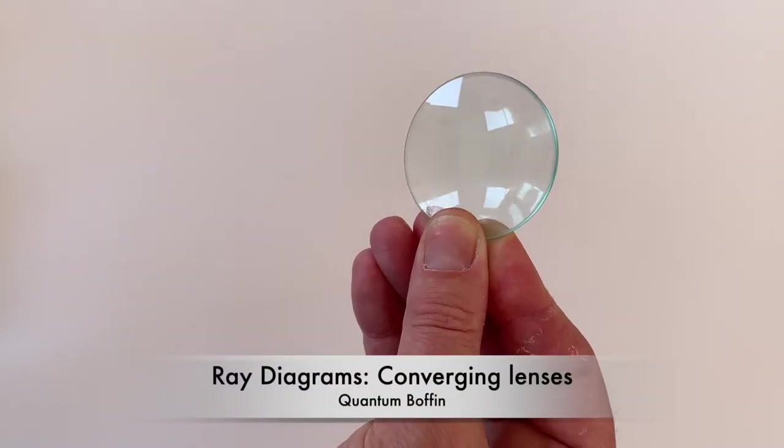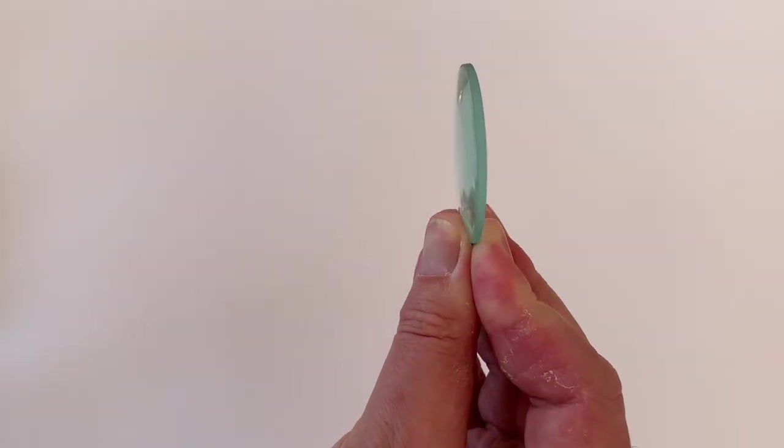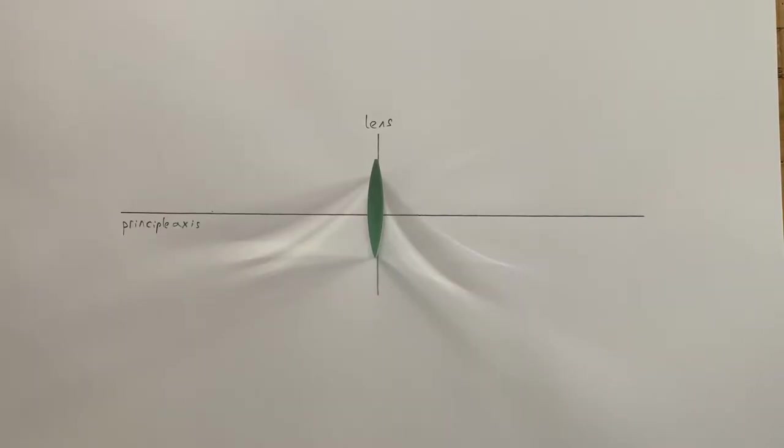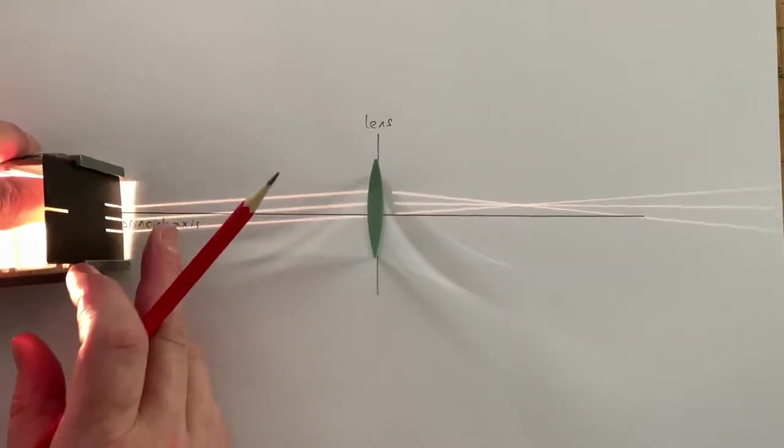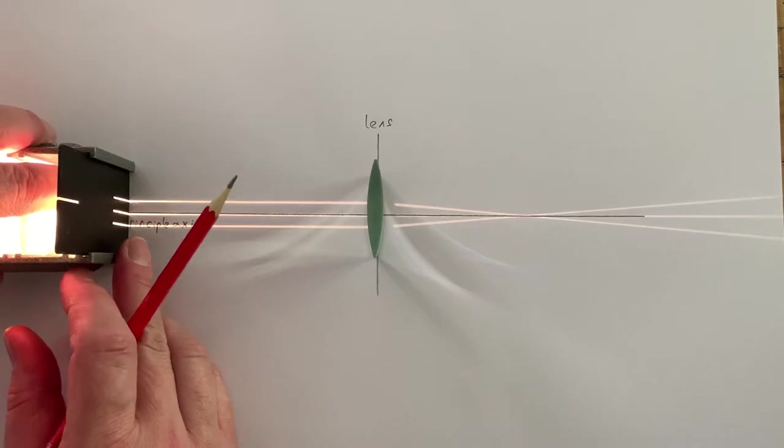A convex lens, also known as a converging lens, is a specially shaped piece of glass designed to bring parallel rays of light to a focus.